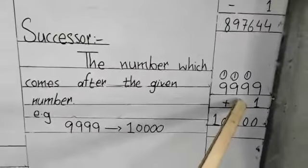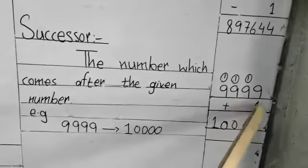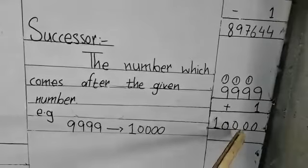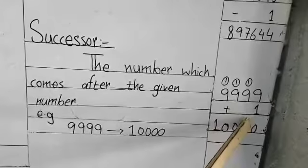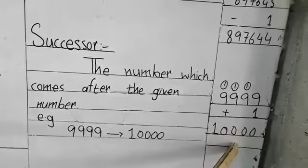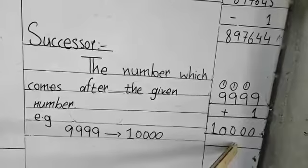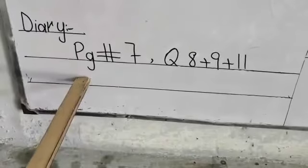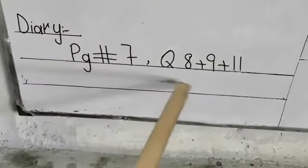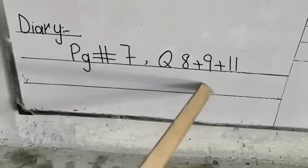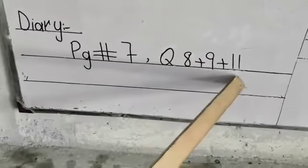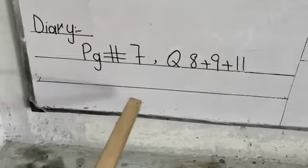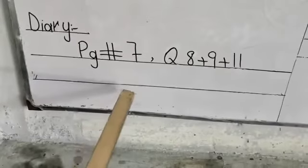Today's diary for math covers page number 7, questions 8, 9, and 11. Questions 8 and 9 are related to predecessor and successor, and question 11 is related to comparisons. You have to attempt these questions in your books so that your concept becomes very clear.